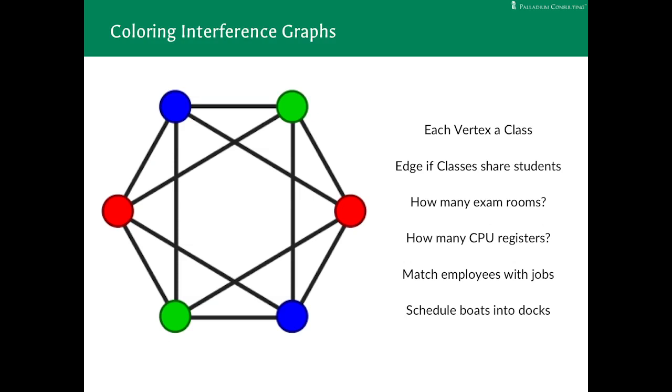And finally, moving to probably the most abstract kind of graph I want to talk about today, it turns out if you build a graph of things that interfere with each other, coloring the graph in so that neighboring nodes don't share colors lets you solve a whole class of very tricky problems. So if each vertex is a class and an edge between two classes indicates that those classes have a common student, then the number of colors you need to color the graph is the number of exam rooms you need, since no student could take two exams at the same time. You could use the same kind of algorithm to match boats into docks or employees with jobs or customers into promotions.